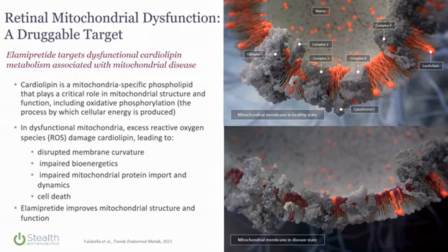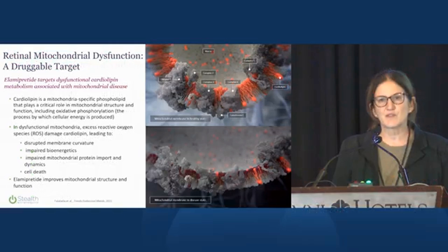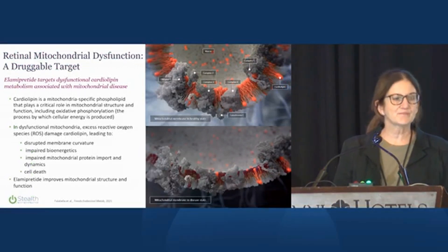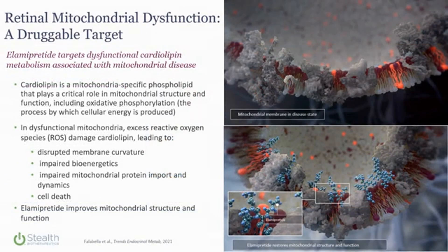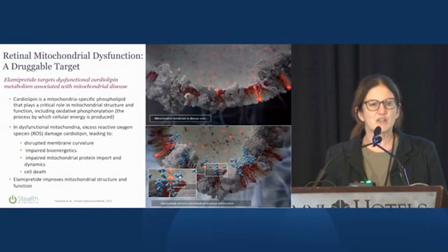The curvature is important to optimize energy production. But importantly, if you look at cardiolipin degradation on the lower right-hand corner, that actually increases oxidative stress when the cristae architecture is lost. Our compound, L-imipritide, interacts with cardiolipin to restore normal mitochondrial structure and function, resulting in increased ATP production, decreased oxidative stress, and decreased inflammation.